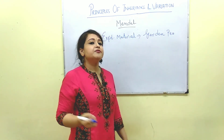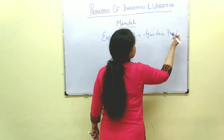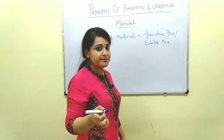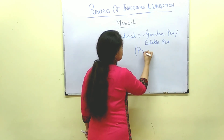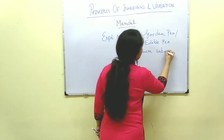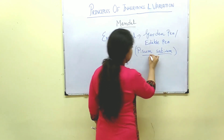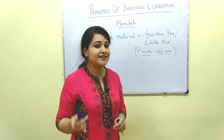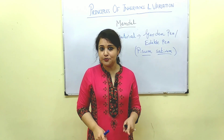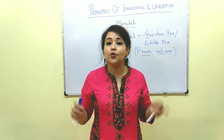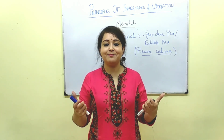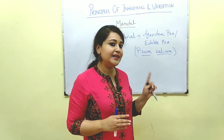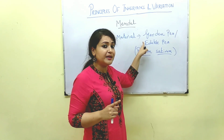Do you know the other name of garden pea? It may also be called edible pea. The scientific name of edible pea is Pisum sativum. Now, don't get confused with sweet pea. There is another variety of pea known as sweet pea, whose scientific name is Lathyrus odoratus. Although the name is sweet, it's actually not sweet — it's toxic. Mendel worked with garden pea or edible pea, not sweet pea.